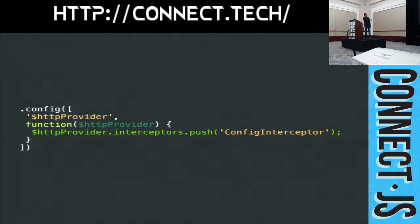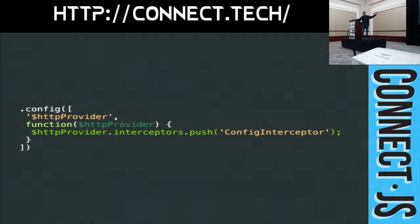The way you set up an interceptor is typically a factory or service — either works. To layer it before the XHR object, use the config method and say $httpProvider.interceptors.push(). Important: factories are not available in the config method. You only give it the name of the interceptor as a string. When the application wakes up, Angular will stack all the interceptors in order.